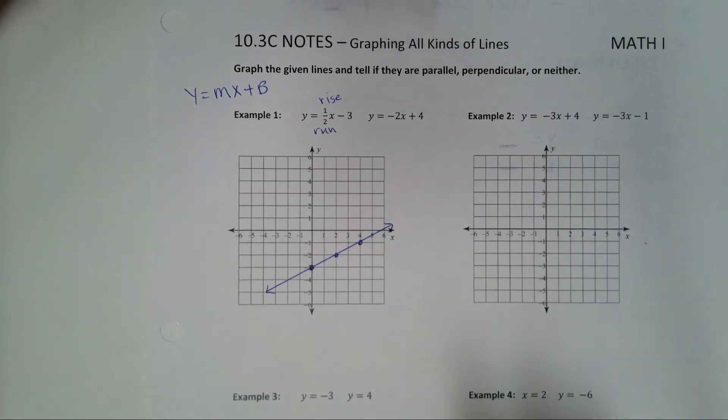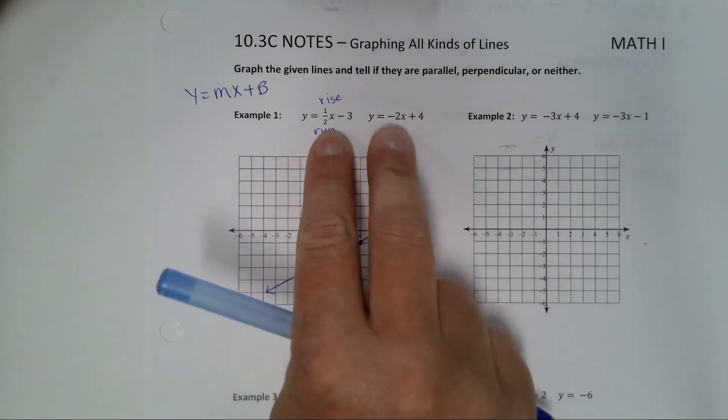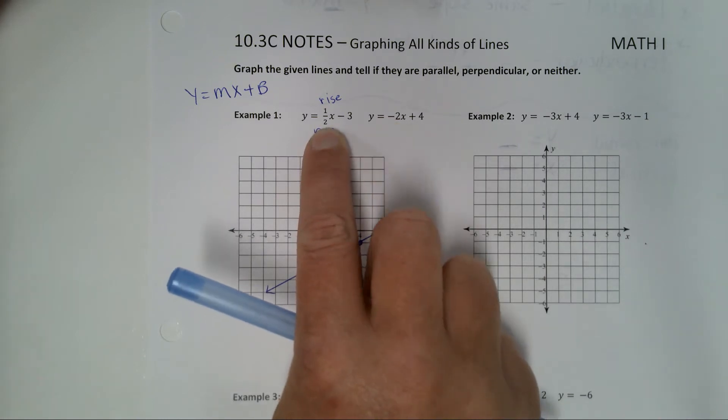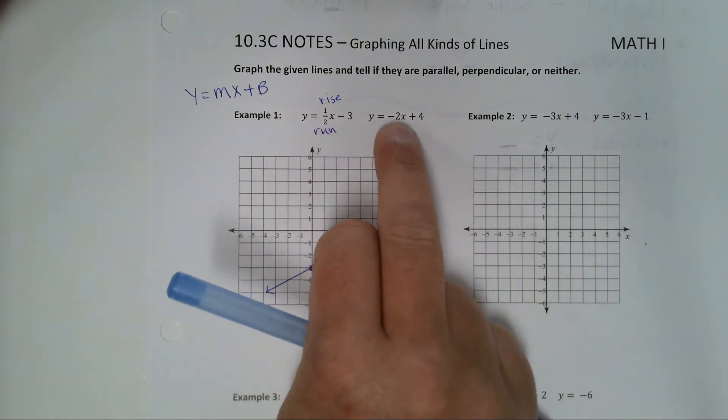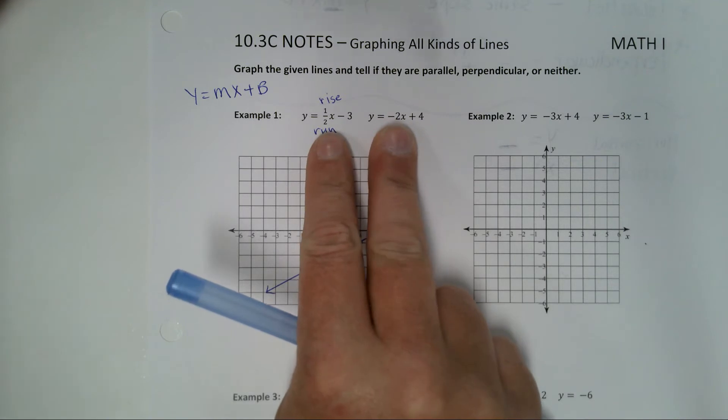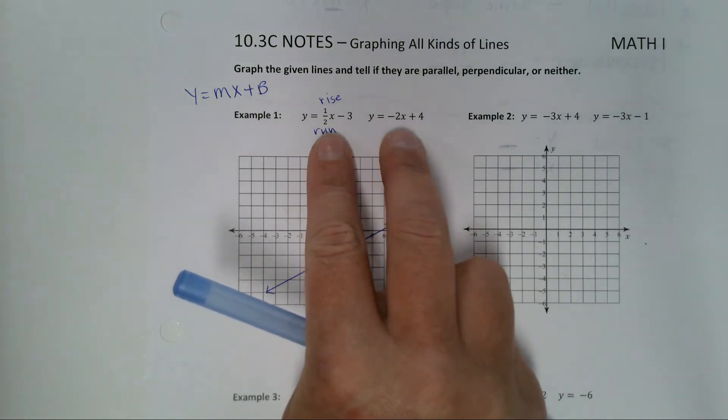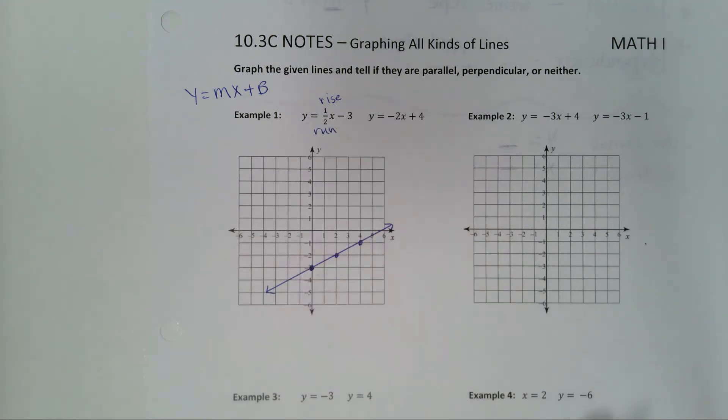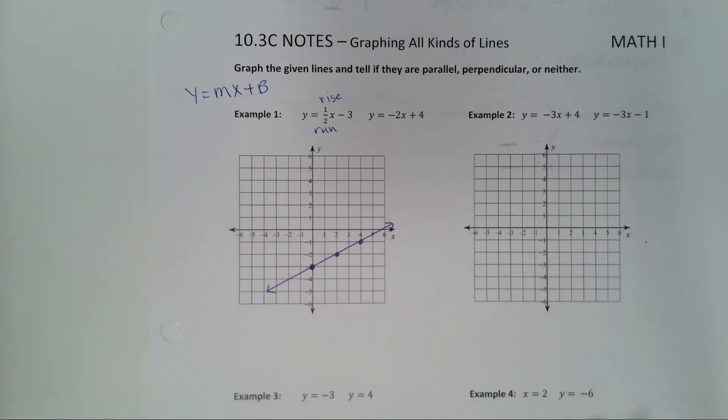Now, before I even graph the second one, are these lines going to be parallel? Do they have the same slope? This one's got a slope of 1 half. This one's got a slope of? Negative 2. These are not going to be parallel. So kind of pay attention to that sort of stuff. You should know before you even graph it if they're parallel. These are not parallel. We think that they're probably going to be perpendicular.